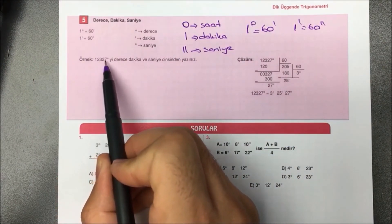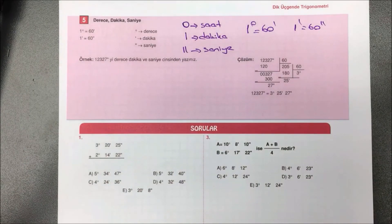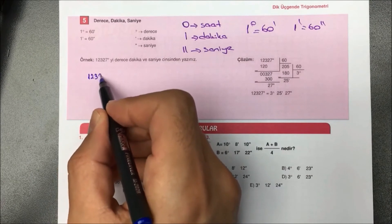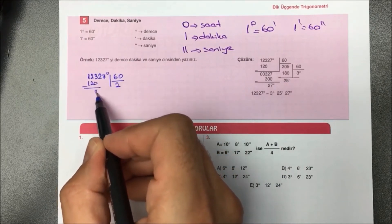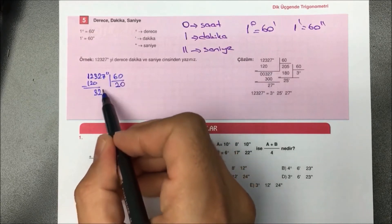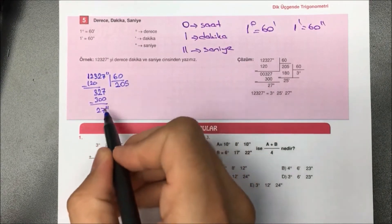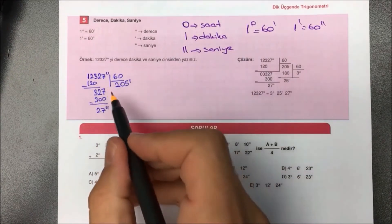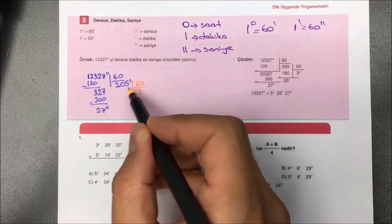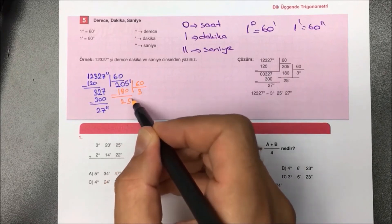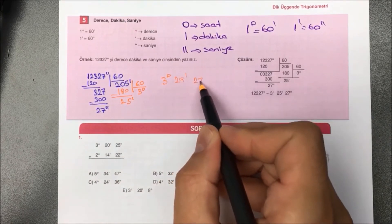12327 saniyeyi derece-dakika-saniye cinsinden yazalım. 12327 ÷ 60: bölüm 205 dakika, kalan 27 saniye. 205 ÷ 60: bölüm 3 derece, kalan 25 dakika. Sonuç: 3° 25' 27''.